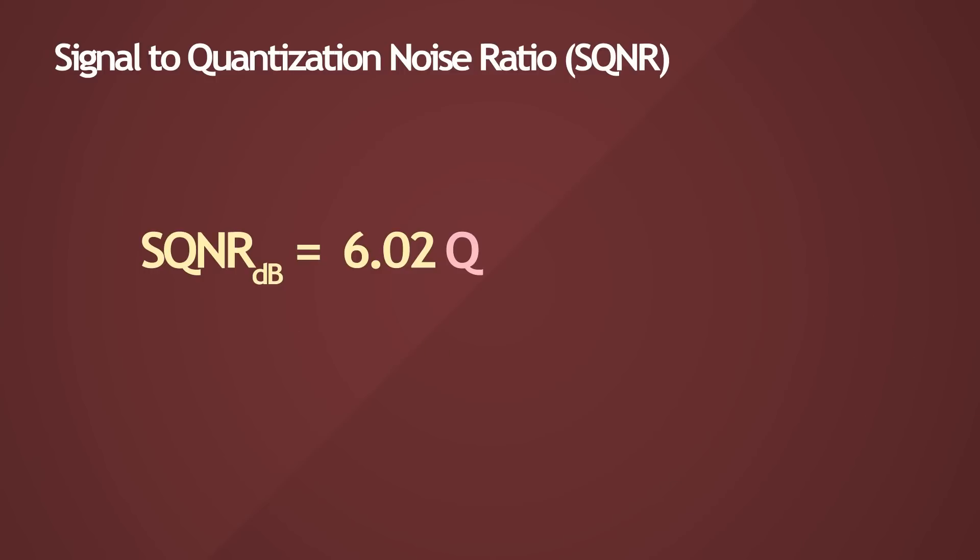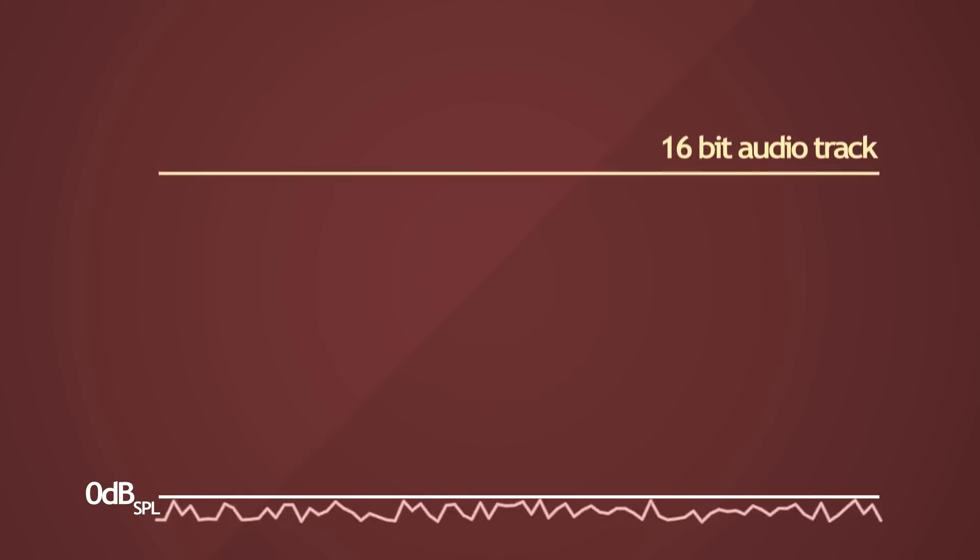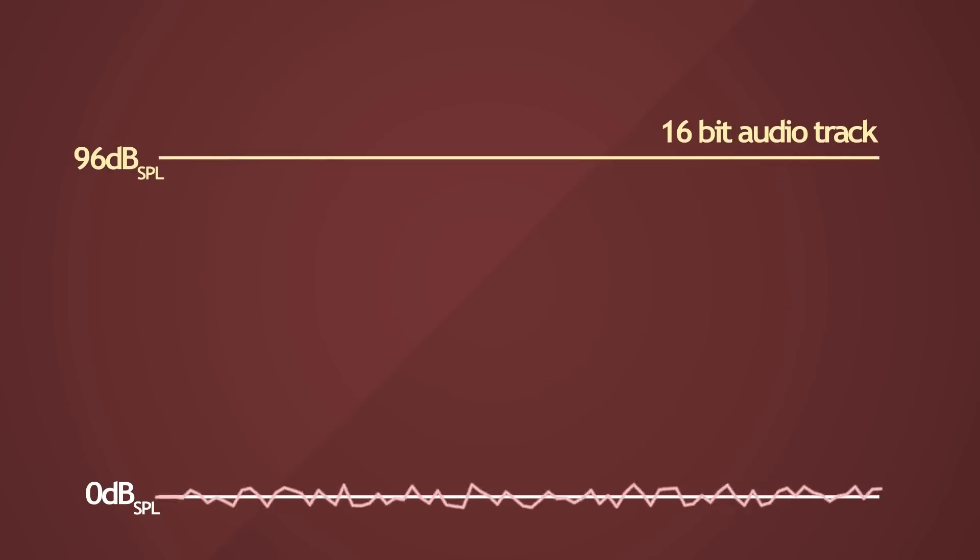Now, for 16 bits, we get the SQNR as 96dB. Now what does this mean in practice? It means that if you're in the quietest setting possible, you'll have to drive a 16-bit audio track up to 96dB of loudness, which is quite high, to even begin to hear the noise associated with quantization.